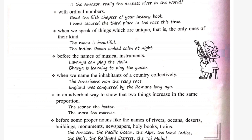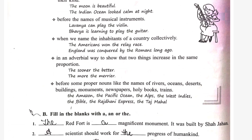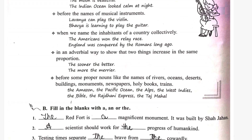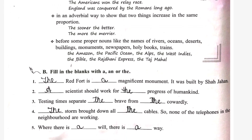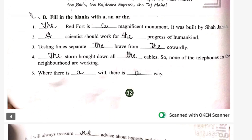When we speak about unique things: the moon, the sun, the stars. Before the names of musical instruments. Before the names of inhabitants of a country: the Indians, the Americans. Before some proper nouns like the names of rivers, oceans, deserts, buildings, monuments, newspapers, holy books, trains, etc.